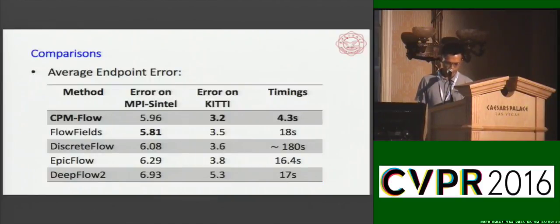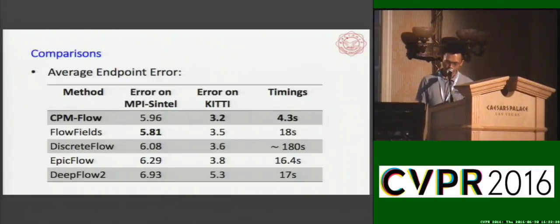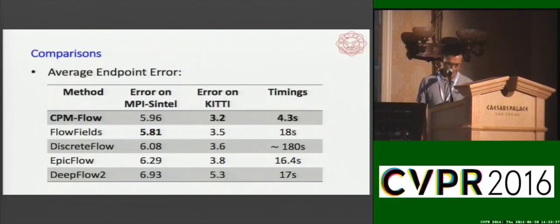Looking at quantitative results on the MPI and KDE datasets, our CPM flow achieves about 6 pixels in average endpoint error on MPI and 3.2 pixels on KDE. Furthermore, it takes only about 4 seconds per image pair without any multi-core or GPU acceleration. Our CPM flow achieves state-of-the-art performance both in accuracy and efficiency.